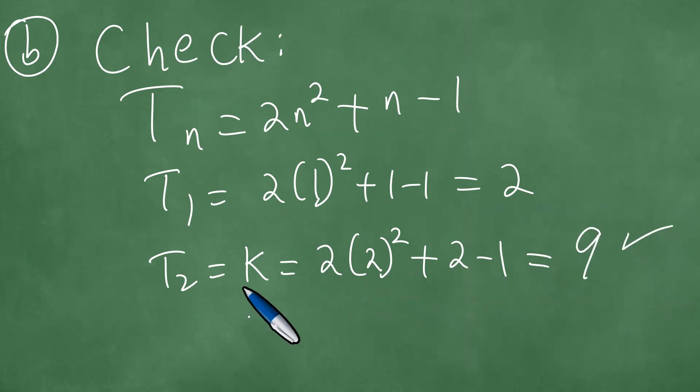So obviously, we just produced the k equals 9 here, so we are done. So we have solved this quadratic number pattern problem in detail. Thanks, everybody, for your attention, and goodbye to you.